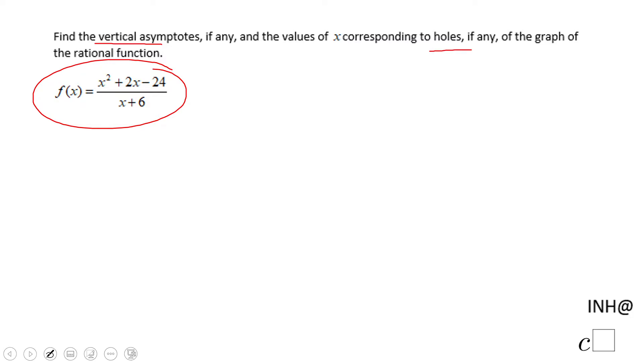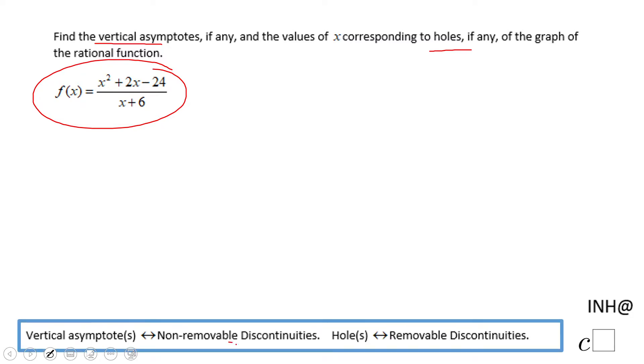How we find these asymptotes or holes is by finding what we call discontinuity, which means you take that denominator and make it equal to zero. That will allow you to find the discontinuities.